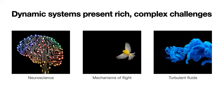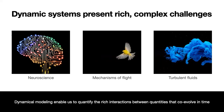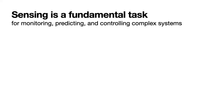Dynamic systems are found all around us and they present a really rich and complex set of challenges when we want to monitor, predict, and control whatever system of interest we're studying. Dynamical modeling gives us a mathematical framework to describe the world around us and how things behave and change over space and time. It enables us to quantify these rich interactions between quantities that co-evolve. So how do we monitor and predict and control these complex systems? It all starts with sensing.